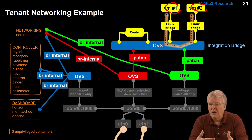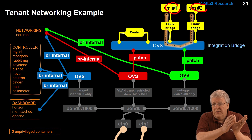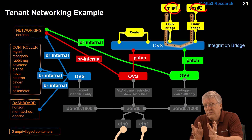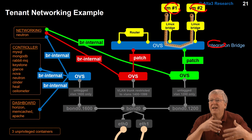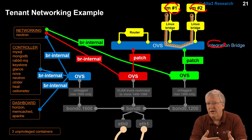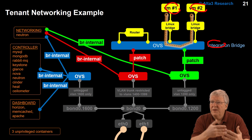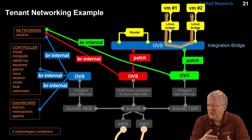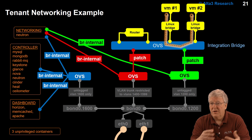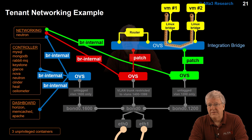Nova built all of this. Nova knew the source. Nova knew the destination. And as long as we tell Nova the name of the integration bridge, it wires everything up for us. So the command to create the network that allows these to be networked is really straightforward, because all the hard work is done in the naming of all this stuff.